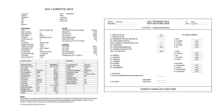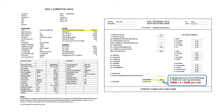On the AHU-1 submittal data sheet, the airflow CFM design is documented as 16,500 for two coils, top and bottom. Therefore, each coil's airflow CFM design is 16,500 divided by two, which is 8,250 CFM for the top coil and 8,250 CFM for the bottom coil.